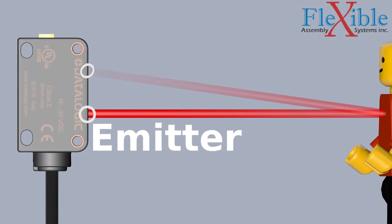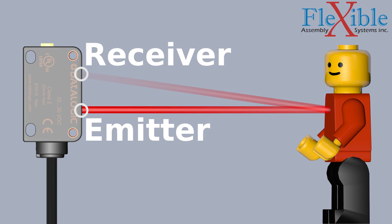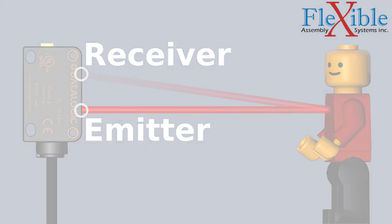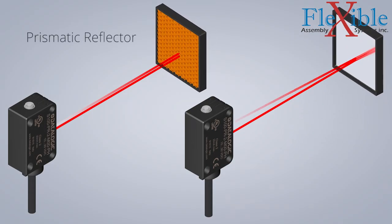Just like retro-reflective sensors, the emitter and receiver for diffuse sensors are located in one housing. The main difference is that diffuse sensors use the target to send light back instead of a dedicated prismatic reflector.